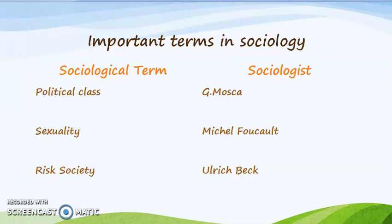The second term is sexuality. This term is associated with Michael Foucault. He is a French philosopher. He has written a book called The History of Sexuality, in which he has elaborately explained about the term sexuality.